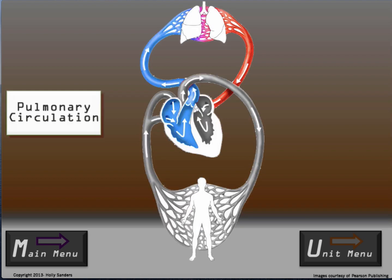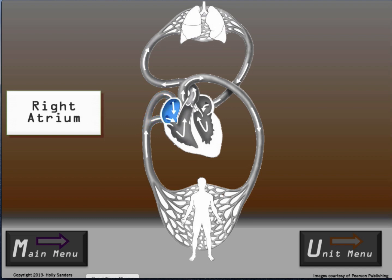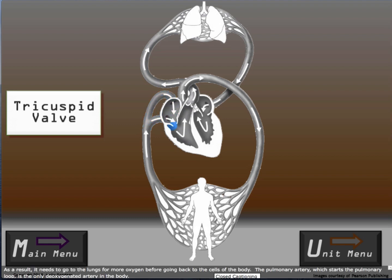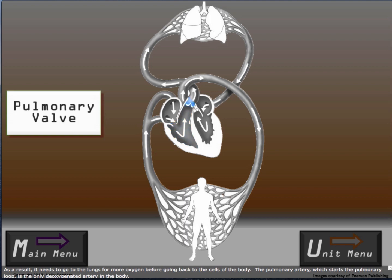The pulmonary circuit sends blood from the right side of the heart to the lungs. Blood from the right side of the heart was received from the body through the vena cava and is deoxygenated. It needs to go to the lungs and receive more oxygen before going back to the cells of the body. The pulmonary artery, which starts the pulmonary loop, is the only deoxygenated artery in the body.